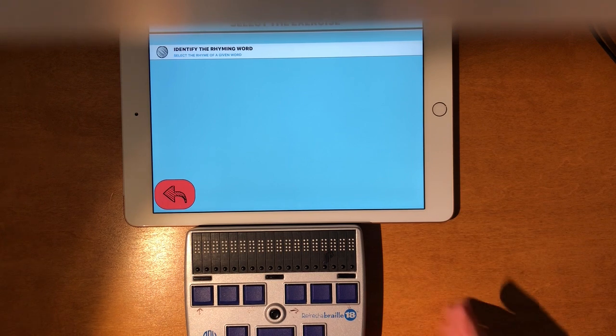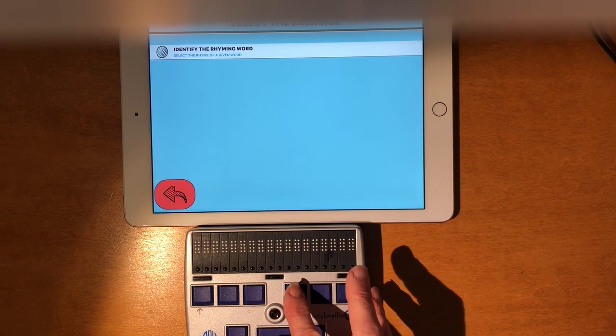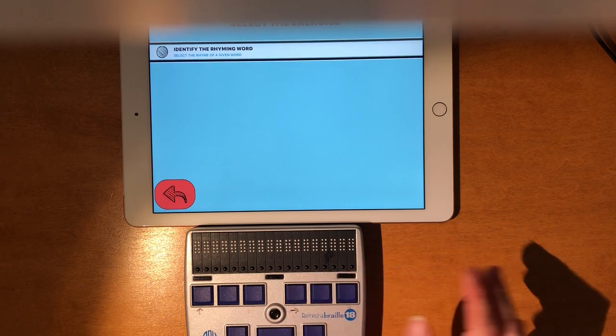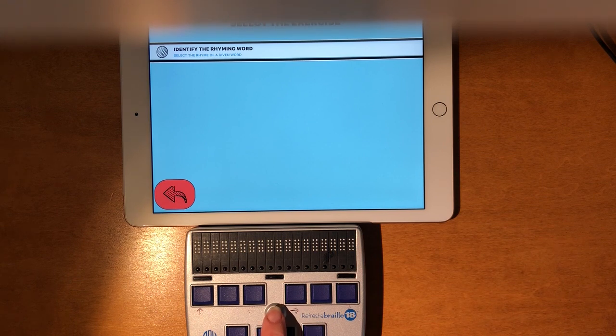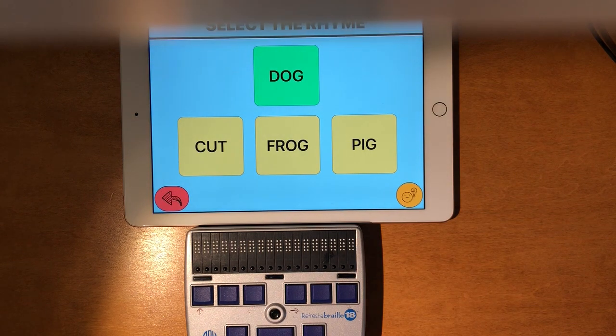So now my choices. I'm on select the exercises. I'm going to use dot 4 space. Identify the rhyming word. Select the rhyme of a given word. Identify the rhyming word. Select the rhyme of a given word. Now I'm going to press my spacebar or my joystick in. Identify the rhyming words. Select the rhyme.